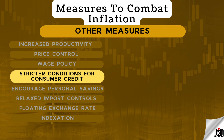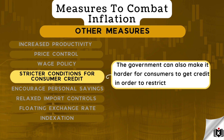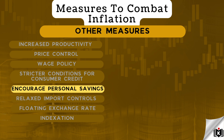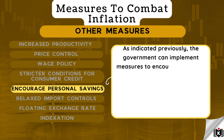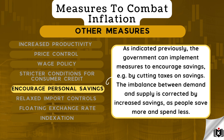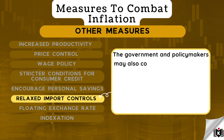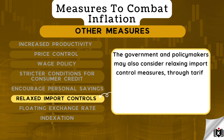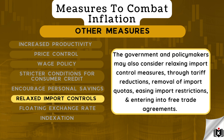Stricter conditions for consumer credit — the government can also make it harder for consumers to get credit in order to restrict their spending. Encourage personal savings — the government can implement measures to encourage savings, for example, by cutting taxes on savings. The imbalance between demand and supply is corrected by increased savings, as people save more and spend less. Relaxed import controls — the government and policymakers may also consider relaxing import control measures through tariff reductions, removal of import quotas, easing import restrictions, and entering into free trade agreements.